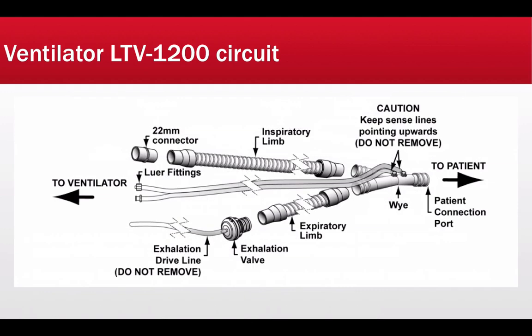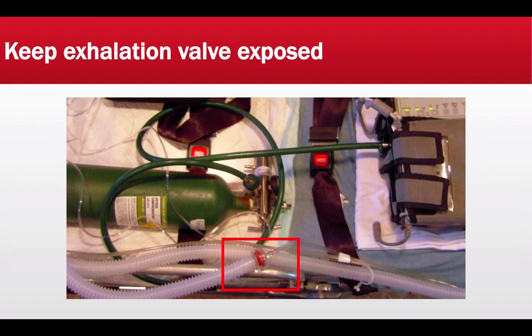Here is another picture of the LTV circuit with all parts distinct from each other. At the top of the Y are the sense lines — keep them pointing up toward the ceiling, not toward the floor. They connect to the ventilator via luer fittings and are color-coded. The exhalation valve also connects to the ventilator and provides important data such as exhaled minute ventilation and exhaled tidal volume. The exhalation valve, shown in the red rectangle in the close-up picture, must remain exposed.